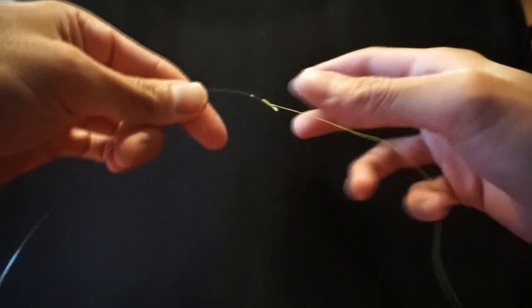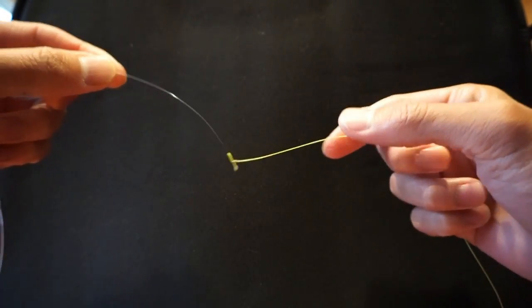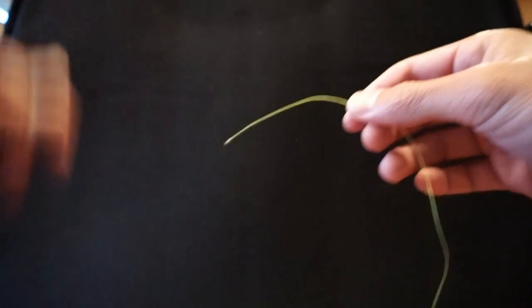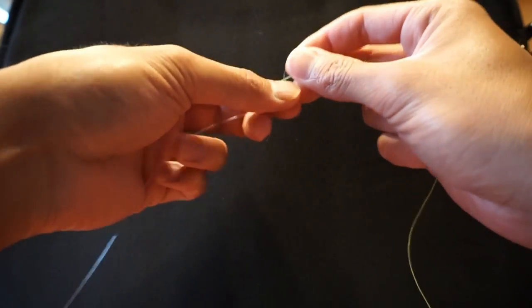There we go. So here's the final product, the Albright knot. And I'm actually going to show you the version I use, because I use a slightly different version, it's pretty much the same. The only thing I do differently is I use, instead of six loops, I just use four loops. So in the same process, I'll show you how fast I can tie this.